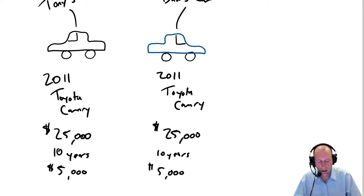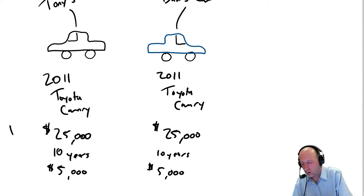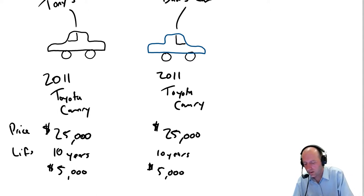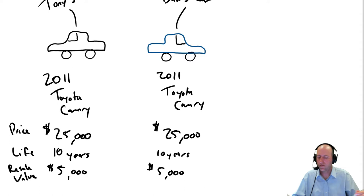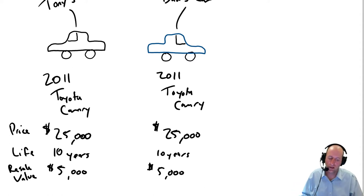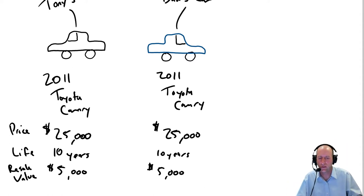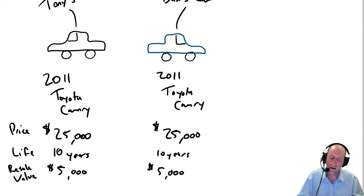The purchase price was $25,000, the life is 10 years, and the resale value at the end of its life is $5,000. There's a term we use in this chapter — it's called residual value. So the residual value of our car, we would think, would be around $5,000.